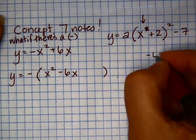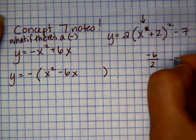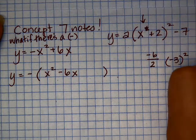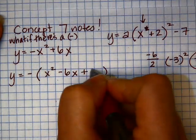We take this middle term, negative 6. We take half of it, and then we square it, which gives us a positive 9. So I'm going to add a 9 here.